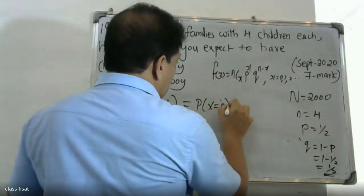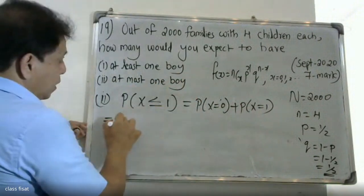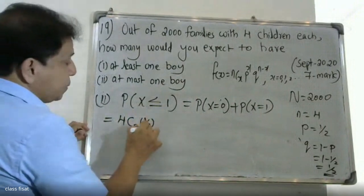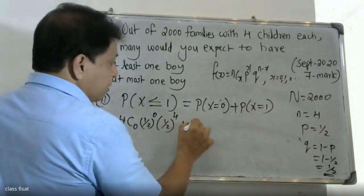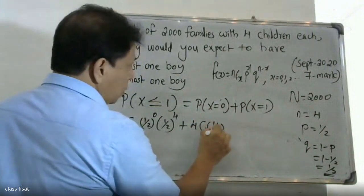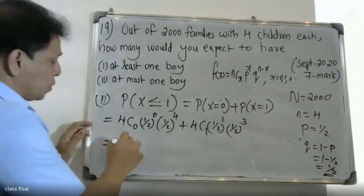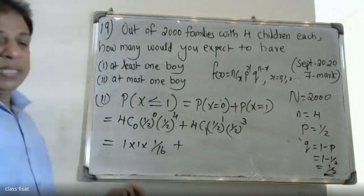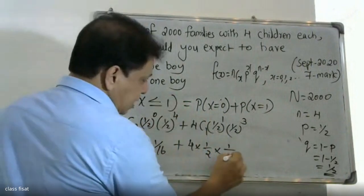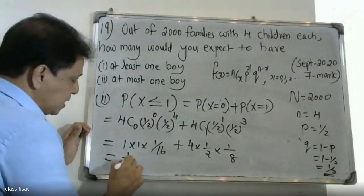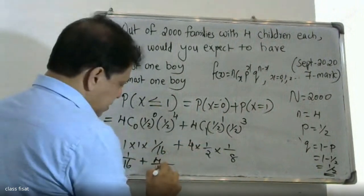Probability of X equal to 0 plus probability of X equal to 1. For X = 1: 4C1 × (1/2)^1 × (1/2)^(4−1) = 4C1 × 1/2 × 1/8 = 4 × 1/16 = 4/16. Adding the X = 0 term (1/16), we get 1/16 + 4/16 = 5/16.